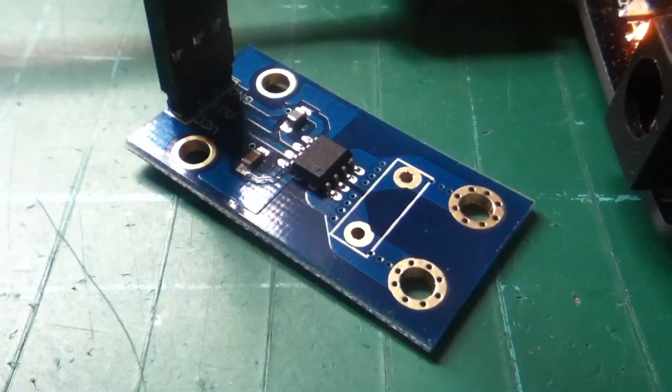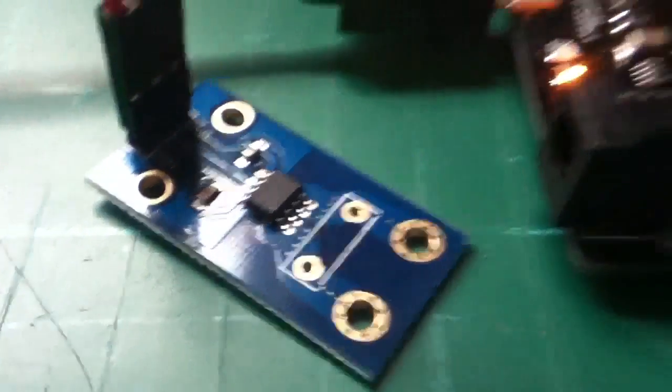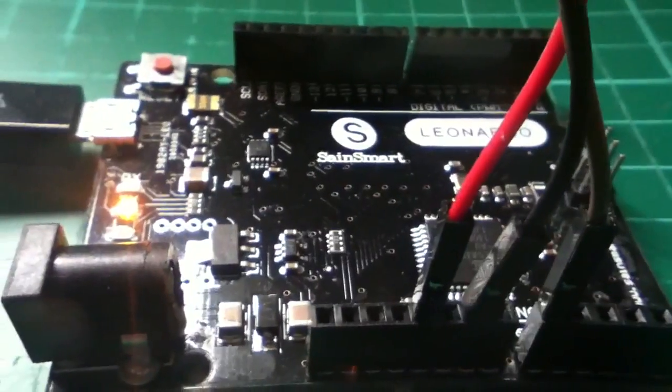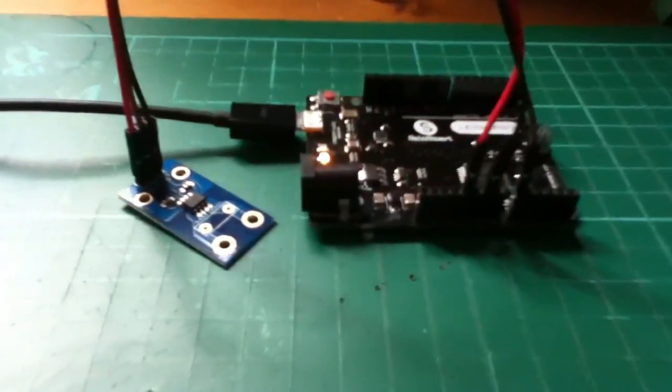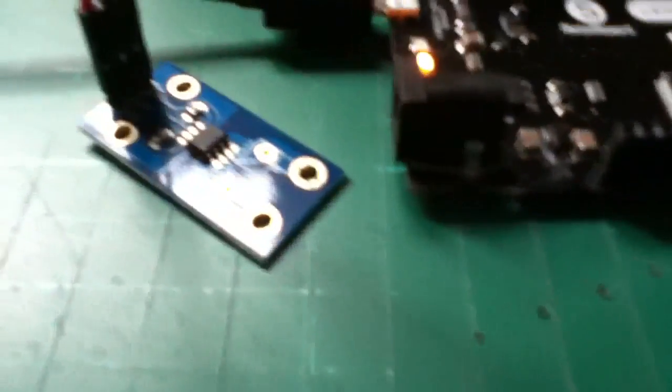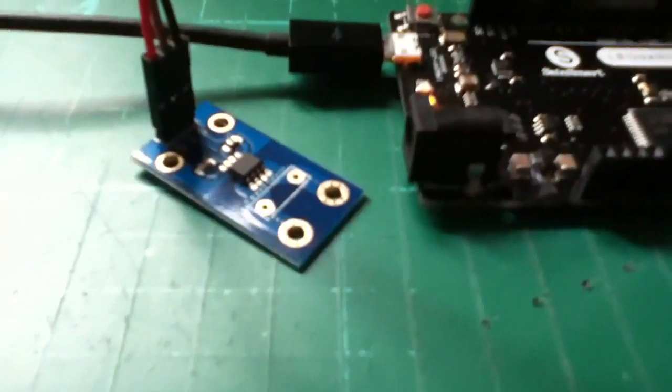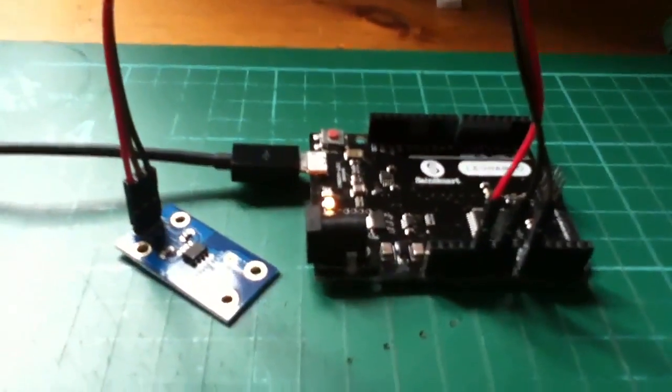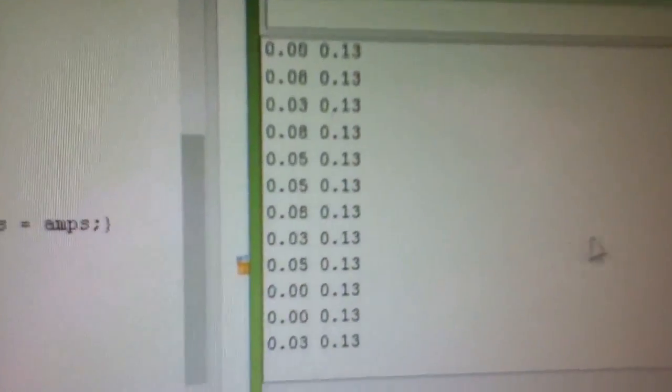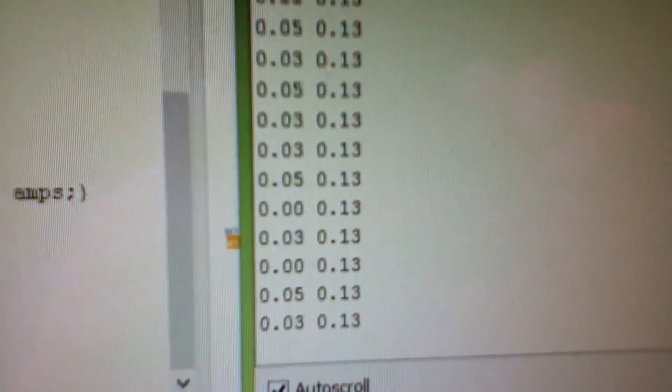Here's the ACS712 current sensor module hooked up to a Leonardo Arduino. It's just sitting there with nothing connected to the high current side, so it's measuring zero amps. I'm expecting the data coming out of this thing to be zero. Let's have a look. The first number is amps.